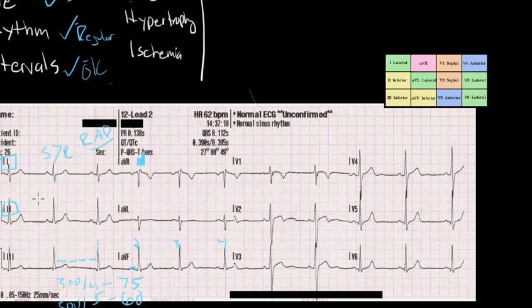However, if in lead two your S is greater than R, that's a sign of left axis deviation. And if in neither leads one or lead two, do you see any findings of S being greater than R, that means you just have a normal axis.